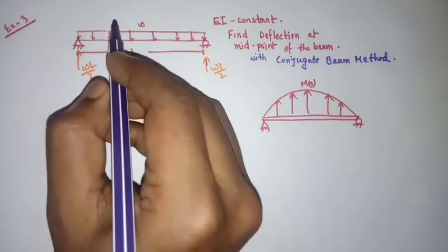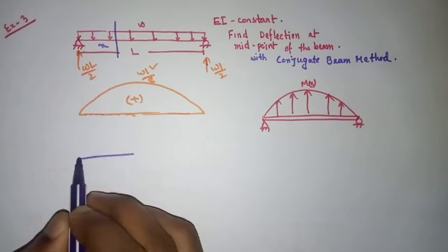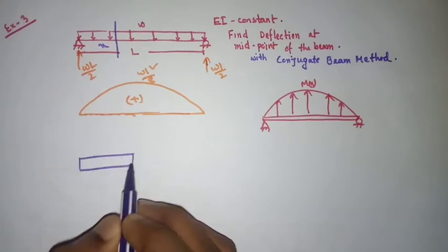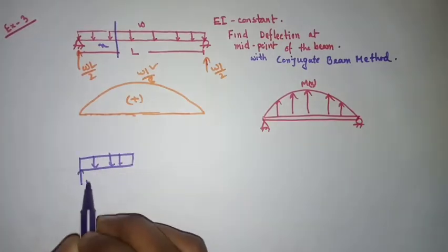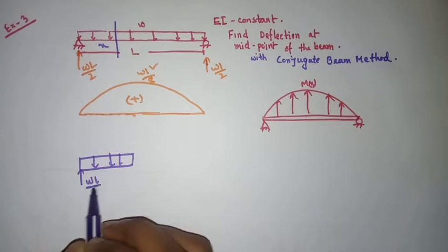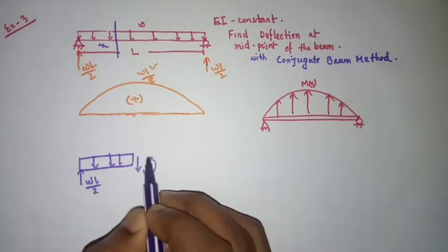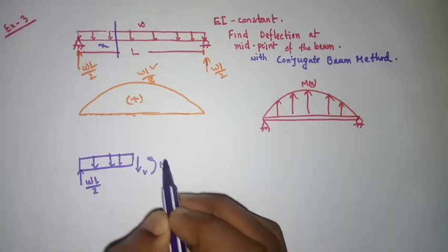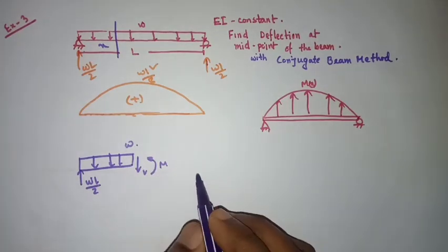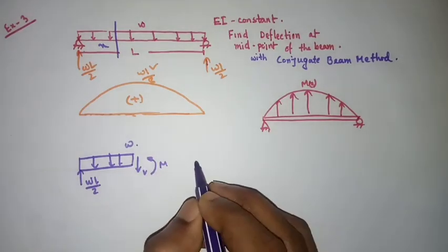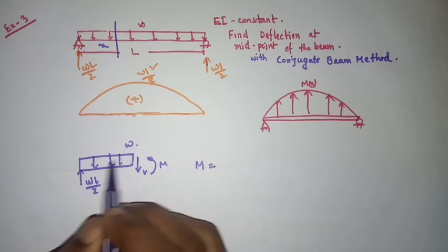So you have to put here the moment function. Cut a section at x. If I draw the section, here is the reaction wL/2, here is the shear V, and this is the moment M, and this is w. So the result is: M equals wL/2...